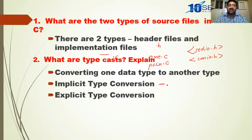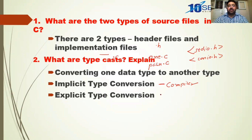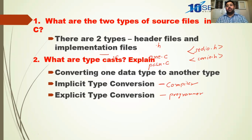For implicit type conversion, the compiler does it automatically — it is also called implicit type casting. For explicit type conversion, the programmer does it — that is why it is called explicit type casting. Always, lower data type will be promoted to higher data type. This is very important because if you convert higher data type to lower data type, you will lose some data.